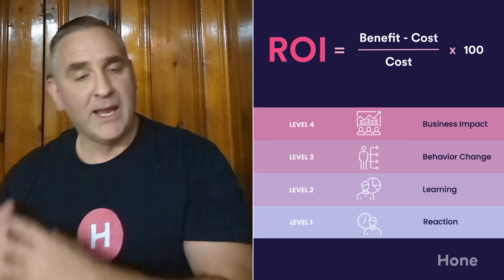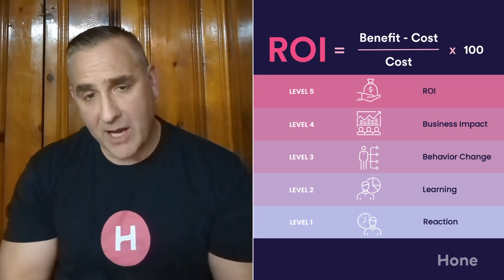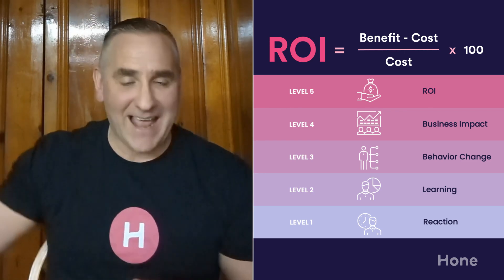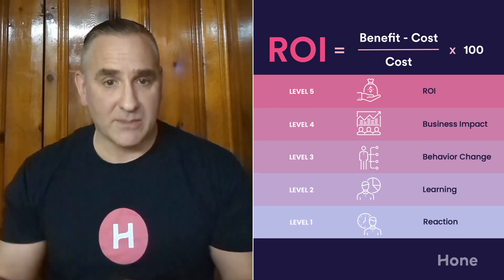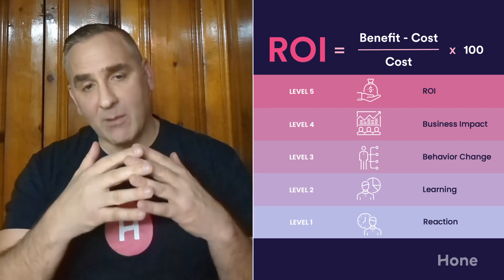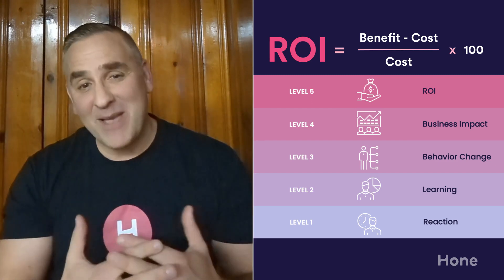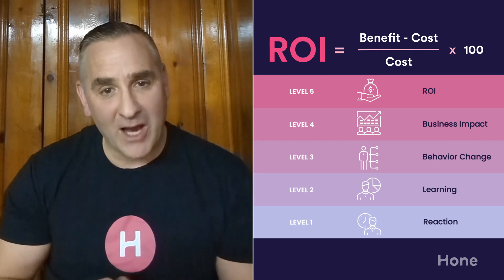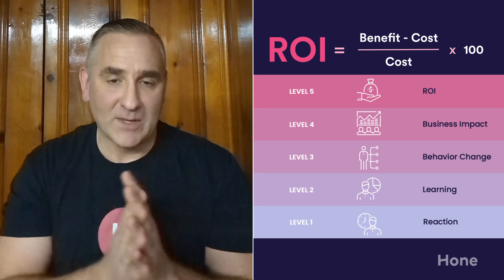We'll turn that into a dollar value for level five. We really try to isolate the impact of the training — we don't take credit for everything that happens after the training. Whether it's a control group, attribution, or estimate technique, we hone in on what impact can truly be attributed to the training program. If we find that isolated benefit, we'll put that against the cost of the training at level five, working with finance people within our clients' companies.